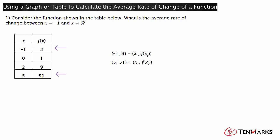Call one point x sub 1, f of x sub 1, and the other point x sub 2, f of x sub 2. The average rate of change is the difference of the y values divided by the difference between the x values. You can write this as f of x sub 2 minus f of x sub 1, all over x sub 2 minus x sub 1. Substitute to write 51 minus 3 all over 5 minus negative 1. Subtract in the numerator and denominator to get 48 over 6. Simplify the fraction to get 8. Therefore, the average rate of change for the given interval is 8.